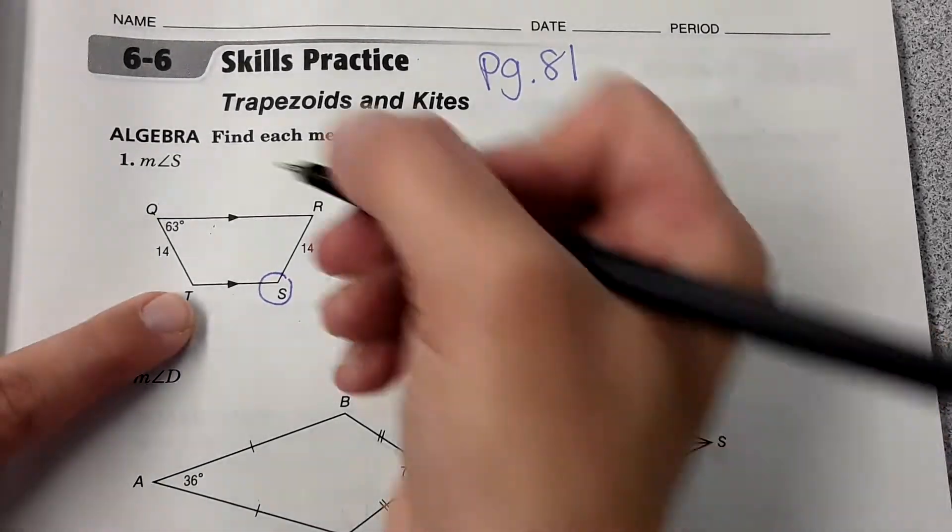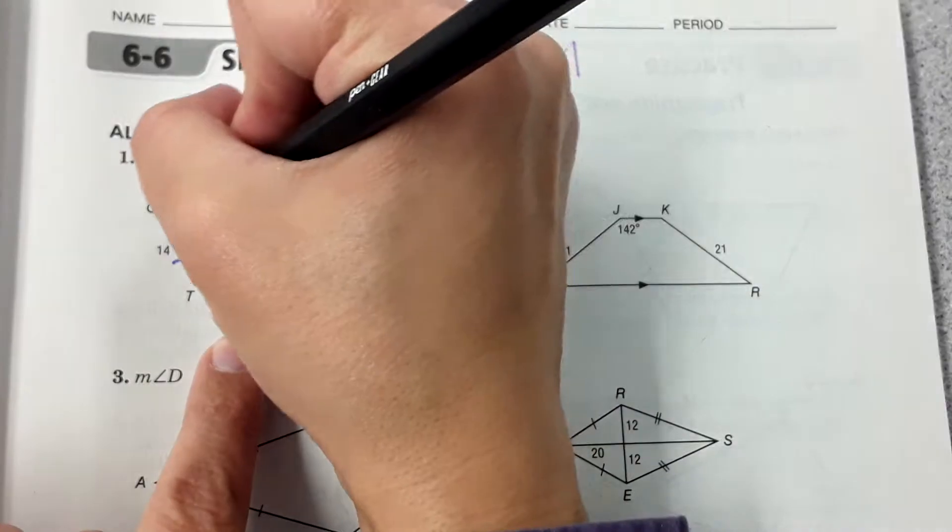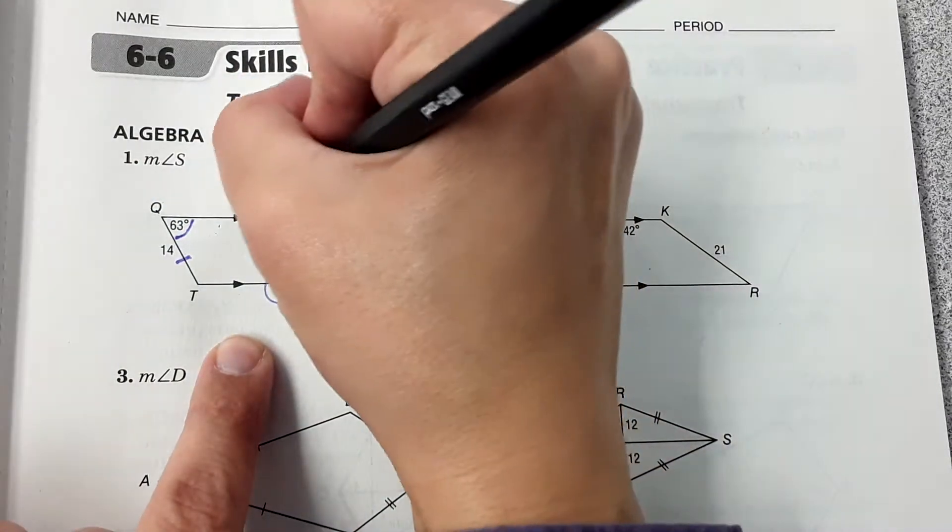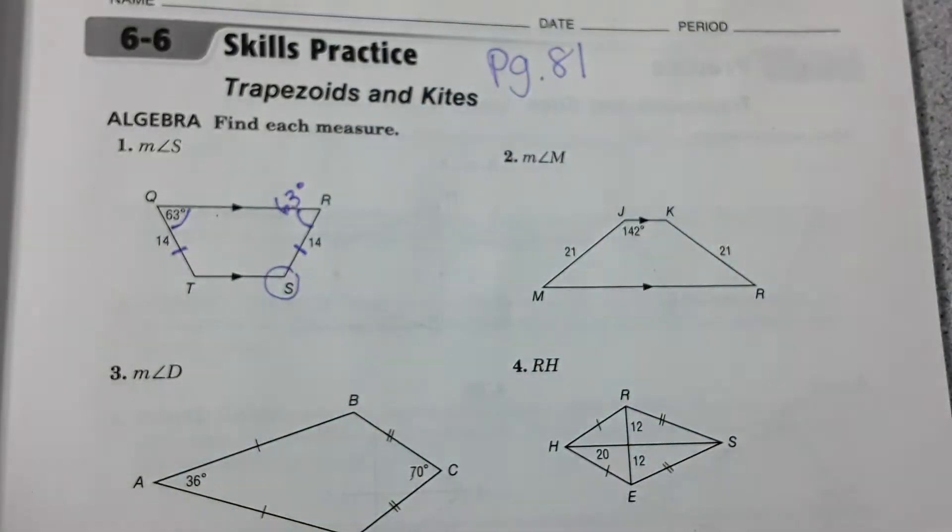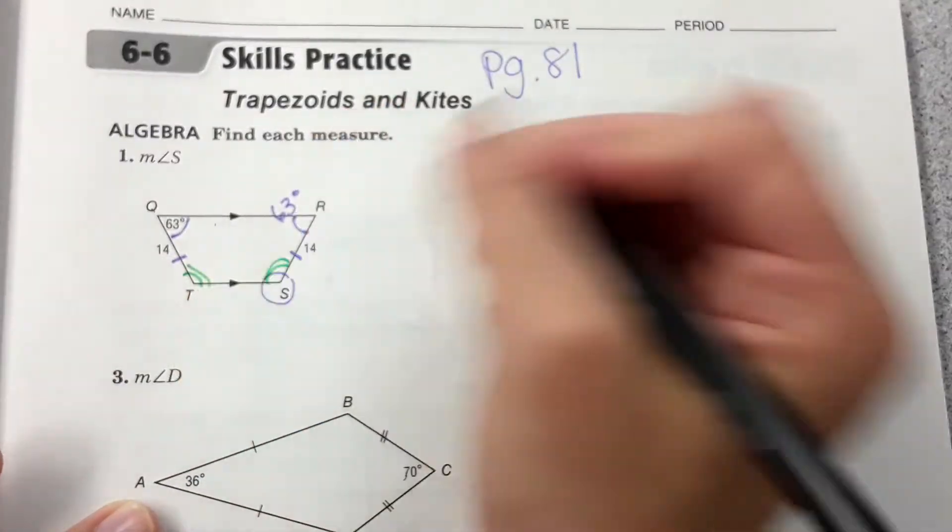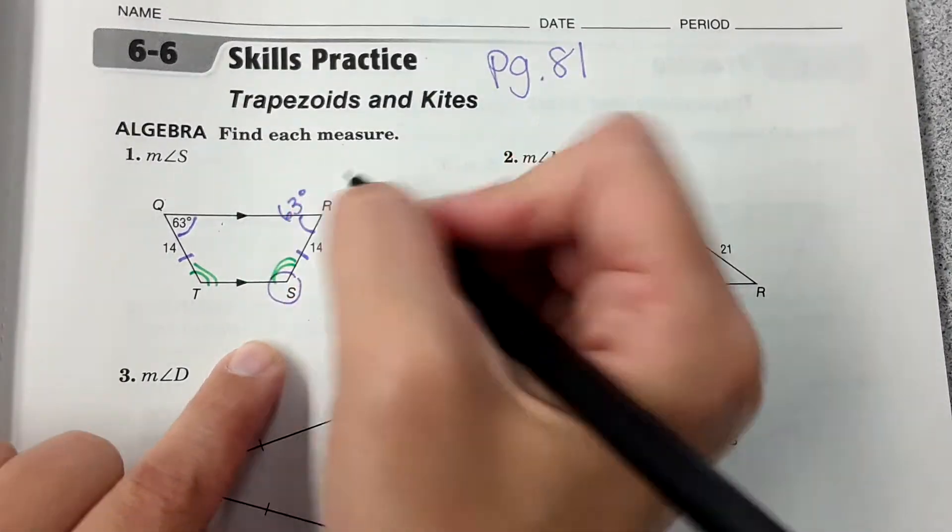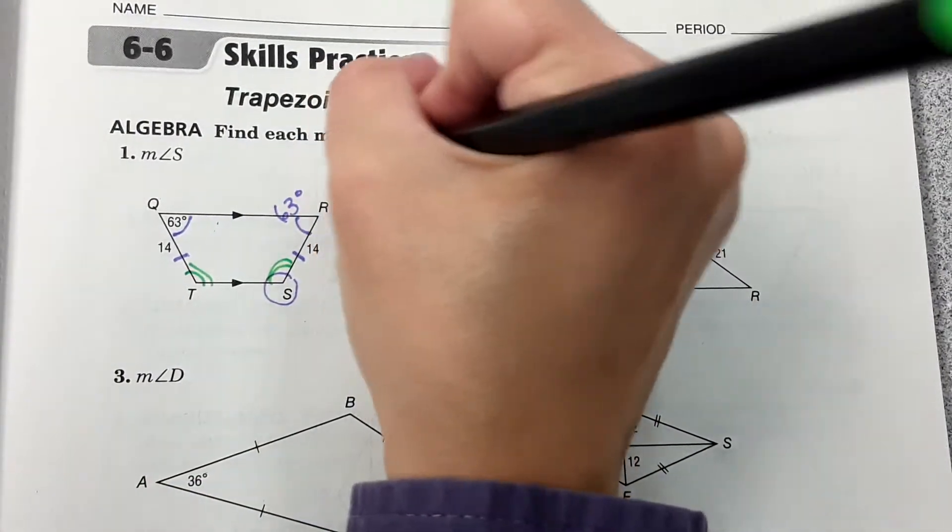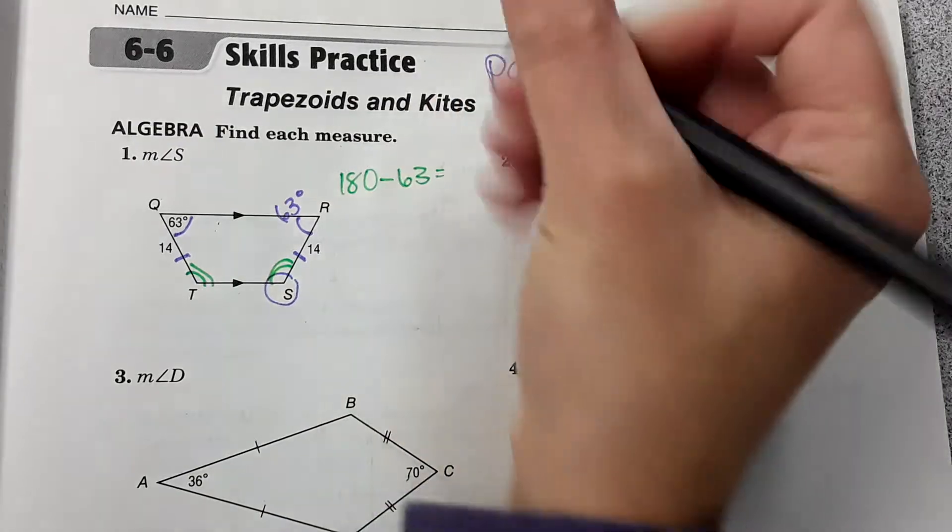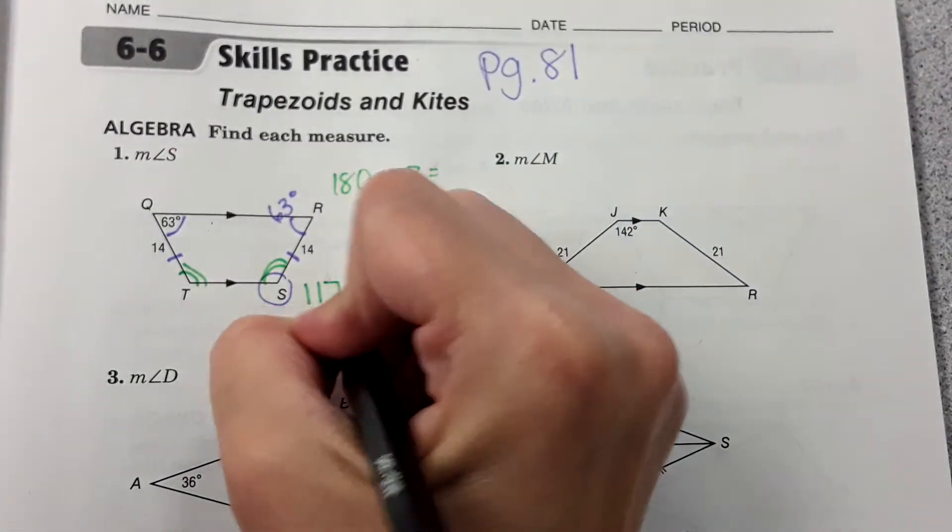Looking at this trapezoid it is isosceles. That means this angle is the same measure as this one so this must be 63 degrees as well, and then this angle is the same as this one. With a trapezoid these two angles are supplementary so we can do 180 minus 63 and we get 117. So measure of angle S is 117 degrees.